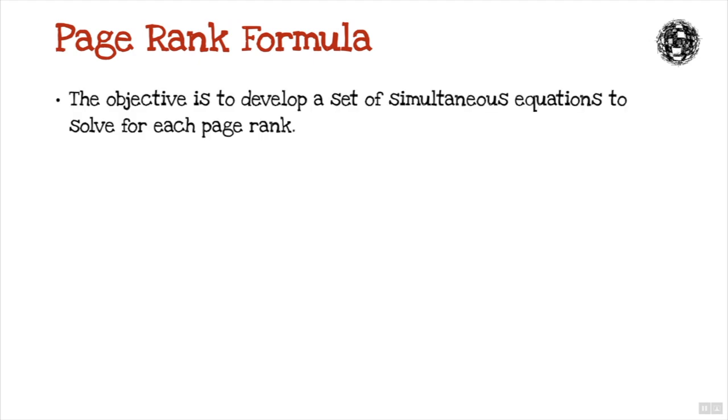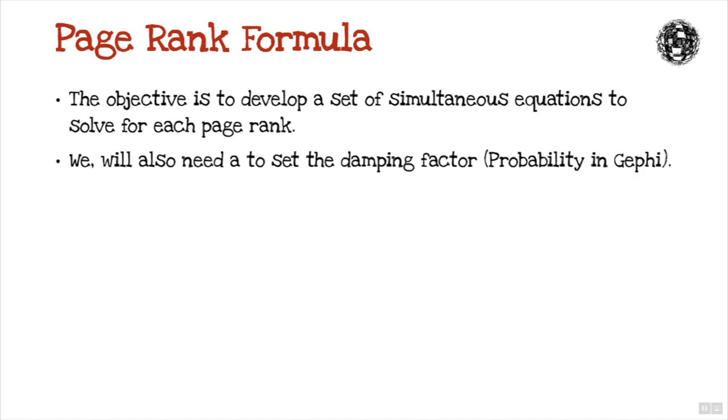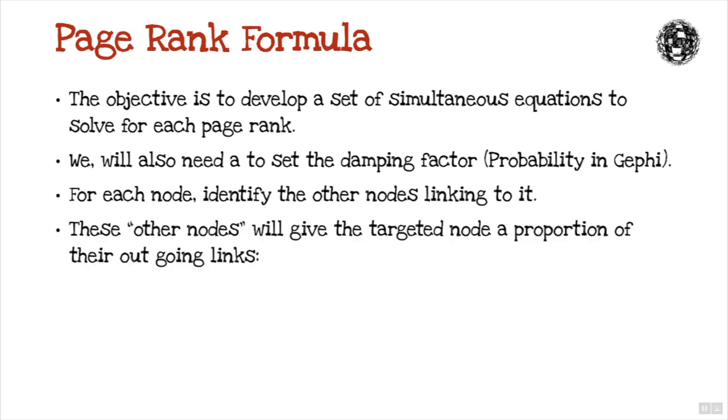So the page rank formula. The objective, first of all, is to develop a set of simultaneous equations to solve for each page rank. We will also need to set the damping factor, as we highlighted earlier, or probability, as it's known in Gephi. And then for each node, identify the other nodes linking to it. These other nodes will give the targeted node a proportion of their outgoing links.